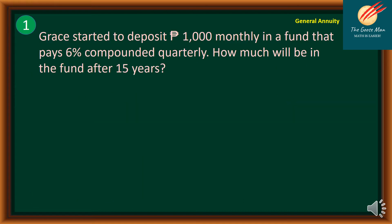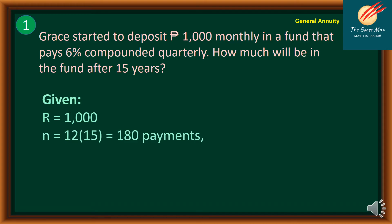Example number one: Grace started to deposit 1,000 pesos monthly in a fund that pays 6% compounded quarterly. How much will be in the fund after 15 years? The given values are: R equals 1,000 pesos; total number of payments is 12 times 15, which equals 180 payments; quarterly interest rate is 6%; number of conversions equals 4. We want to find the future value.